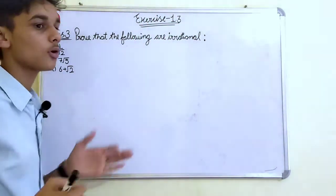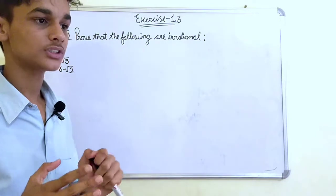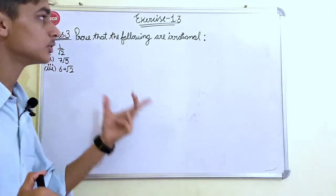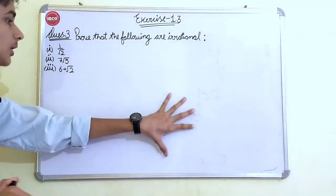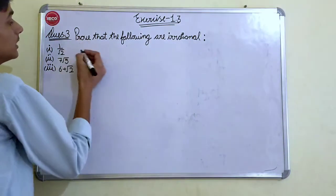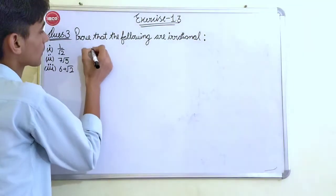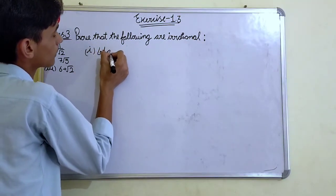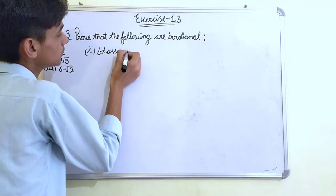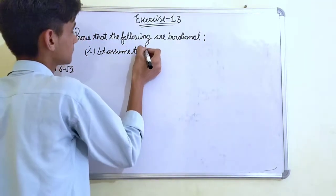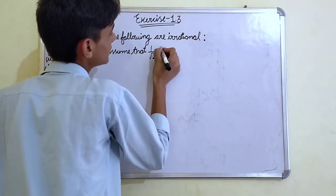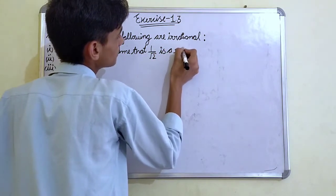For that, we have to follow the following steps. If you don't know the steps, watch my previous videos. You came to know what are the steps of proving a number is an irrational number. Let's assume that 1 by under root 2 is a rational number.